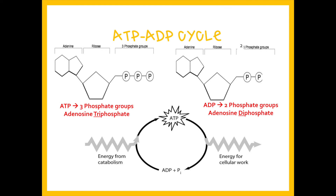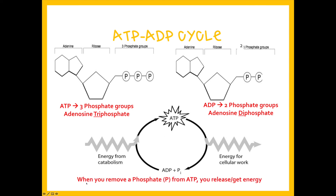Here's the ATP-ADP cycle on your page. Think of ATP as a charged battery full of energy. When that energy is used, you remove a phosphate — and there's that phosphate being removed, leaving you with ADP. Think of ADP as a dead or slightly discharged battery that needs to be recharged back into ATP. When you remove a phosphate from ATP, you release or get energy.